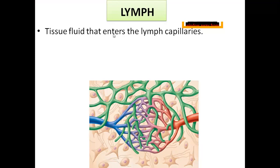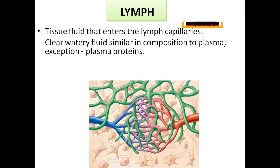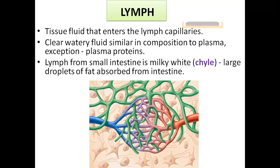The tissue fluid that enters the lymph capillaries is called lymph — the fluid present in the tissues which is not collected by the venous end of the capillaries is collected by the lymph capillaries. When you look at lymph, it is a clear watery fluid similar in composition to plasma, except we do not have plasma proteins and there are no red blood cells. Lymph from the small intestine will be milky white in color, called chyle — large droplets of fat absorbed from the intestine giving it that milky white appearance.